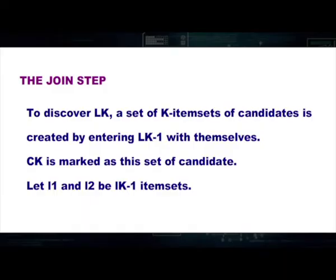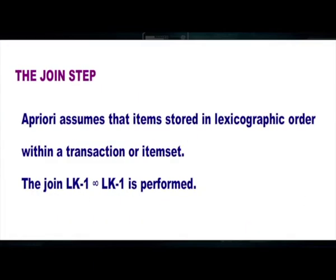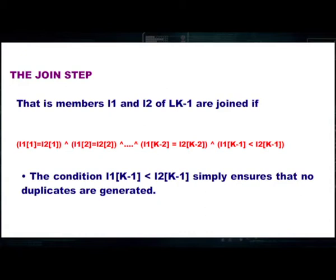In the join step, to discover Lk (the most frequent item set), a set of k-item set candidates is created by joining Lk−1 with itself — this set is marked as Ck. Apriori assumes items are stored in lexicographic order within a transaction. Members L1 and L2 of Lk−1 are joined if L1[1]=L2[1], L1[2]=L2[2], and so on, until L2[k−1]. The condition L1[k−1] < L2[k−1] ensures that no duplicates are added to the candidate subsets.